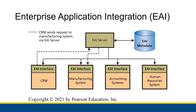An example path: a sale is made in the CRM and it needs to transfer information to the manufacturing system to check whether that number of products is in stock. The CRM asks the server, the server checks with the metadata — which has all the information on what pieces of data are stored where — and the metadata says it's stored in the manufacturing system. The server then checks with the manufacturing system through the interface. Software layers allow these systems to communicate through the server rather than just their individual databases.